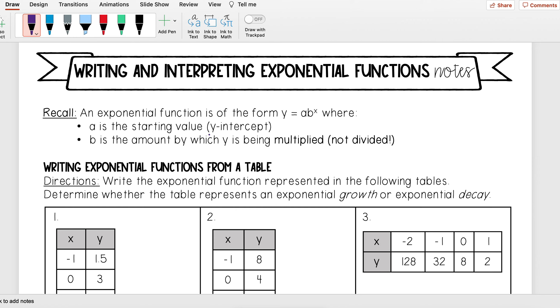In this form, a is the starting value, or the y-intercept. If I was asking for the y-intercept of an equation, it's going to be the a value, which is the point (0, a). And b is the amount by which y is being multiplied.